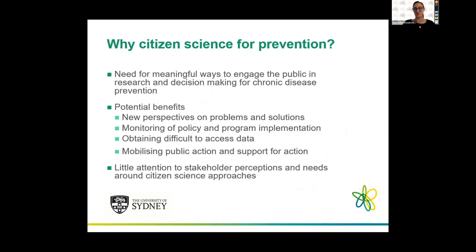So why citizen science for prevention? How do these two things come together? Engaging the public in research and decision-making in chronic disease prevention is really crucial to achieving equitable, feasible and acceptable solutions to the complex health challenges we face in Australia and worldwide. Many agencies are already grappling with how to best engage the public in meaningful ways. In Australia, many health promotion agencies at state and federal level are already making the public central to what they do — they call it consumer engagement, consumer-centred work — but essentially it's putting the public at the centre of decision-making, though they're grappling with how to do that meaningfully.